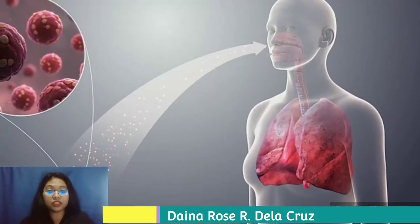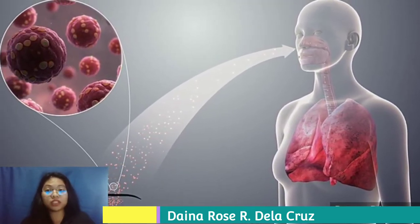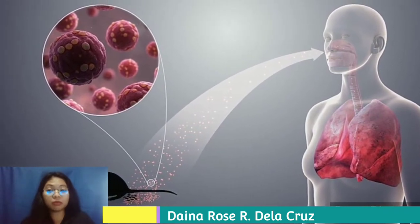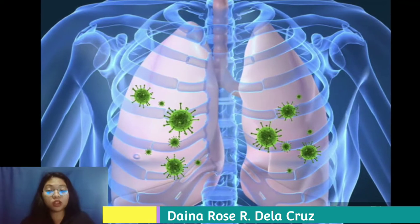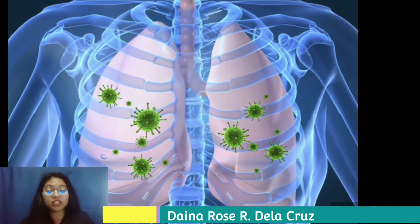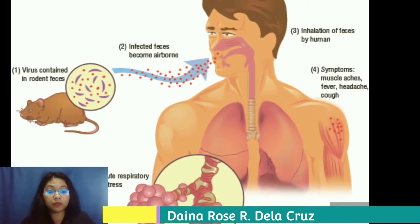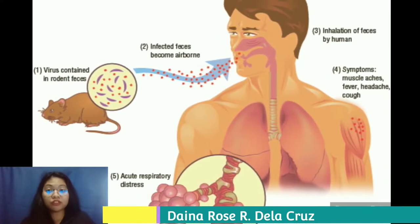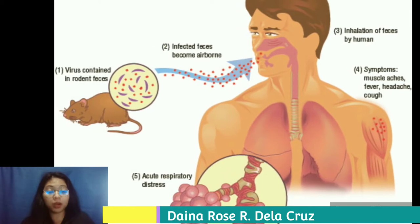Hantavirus is an infectious disease characterized by flu-like symptoms that can progress rapidly to life-threatening breathing problems. Several types can cause hantavirus pulmonary syndrome and are carried by rodents, particularly the deer mouse. Infection occurs primarily by breathing air infected with hantavirus shed in rodent urine and droppings.